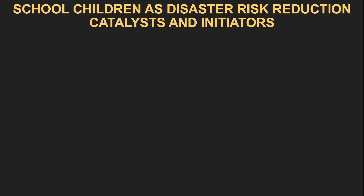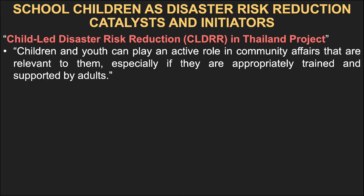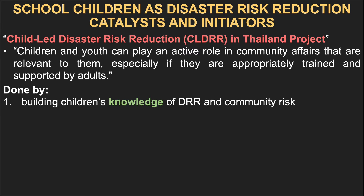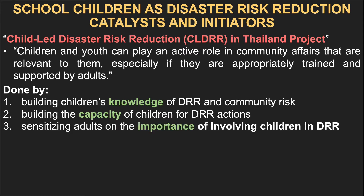Let us start with School Children as Disaster Risk Reduction Catalysts and Initiators. Only after the December 2004 Asian Tsunami Disaster did Disaster Risk Reduction, or DRR, become a focus of interest in Thailand. In 2006, a project called Child-Led Disaster Risk Reduction, or CLDRR, was initiated. The basic principle was that children and youth can play an active role in community affairs relevant to them, especially if appropriately trained and supported by adults. This was done by building children's knowledge of DRR and community risk, building the capacity of children for DRR actions, and sensitizing adults like communities and schools on the importance of involving children in DRR.